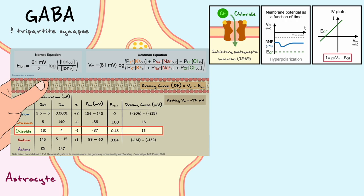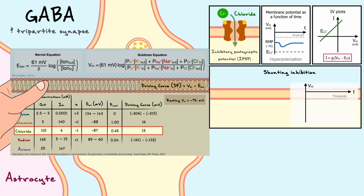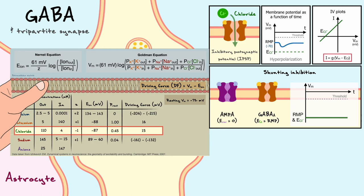A different form of inhibition called shunting inhibition can occur under different conditions. In cases of shunting inhibition, two features are generally present. First, the equilibrium potential for chloride closely equals the resting membrane potential — for this example, imagine the chloride equilibrium potential equals -70 millivolts. Second, there is an excitatory input, such as from an AMPA glutamate receptor. If the GABA channels were to open alone, there would be no net current because the cell is already at the chloride equilibrium potential.